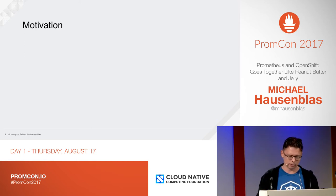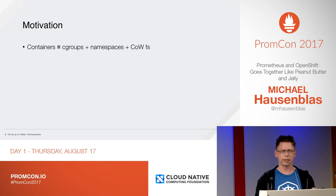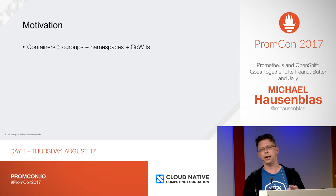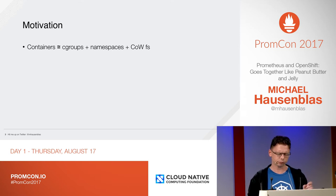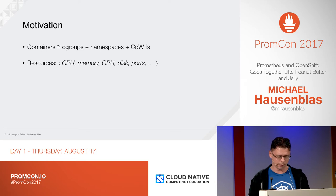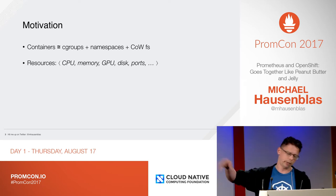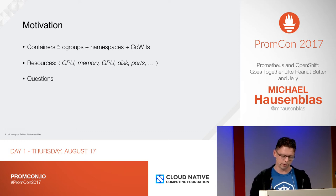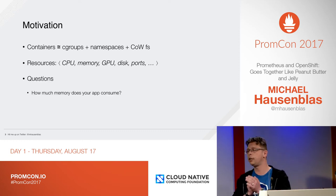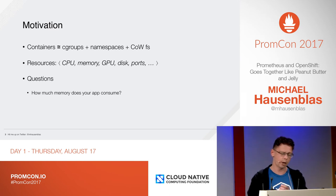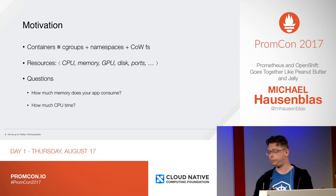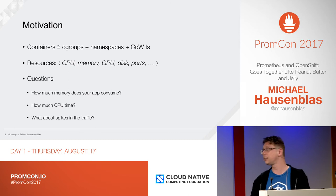A more technical variation is: you've got containers in your cluster, and basically they're made up of cgroups, namespaces, and a copy-on-write file system. You've got resources — a vector of things like CPU, memory, GPU, disk, ports, and so on. And you've got a couple of questions, like how much memory does your app actually consume? Or how much CPU time? Or what about spikes in traffic — how can you assess that?